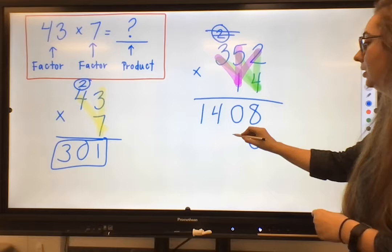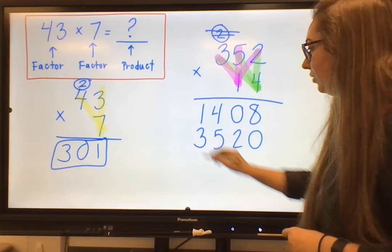Let's go ahead and multiply. So 1 times 2, 2. 1 times 5, 5. 1 times 3, 3.